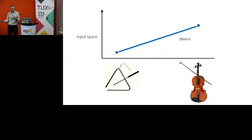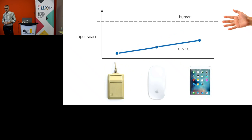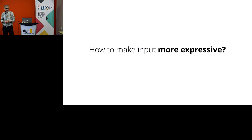We can graph these different instruments against input space, and the violin is at least starting to approach our human capabilities. But if you look at a similar graph for input devices, we've got quite a gap. Even multi-touch, which is much more expressive than the Magic Mouse, we still have this expressivity gap — a gap between what the device can do and what the human is capable of in terms of physical articulation of fingers. A lot of my research is about how do we make input more expressive and close this gap.